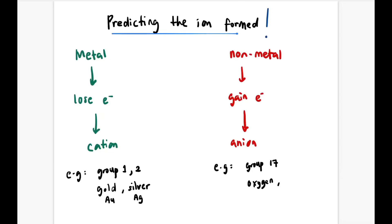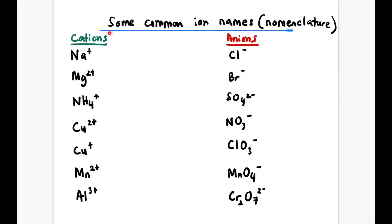Now let's learn some common ion names for cations and anions. Let's start with Na+ sodium ion, then Mg2+ magnesium ion, NH4+ ammonium ion.